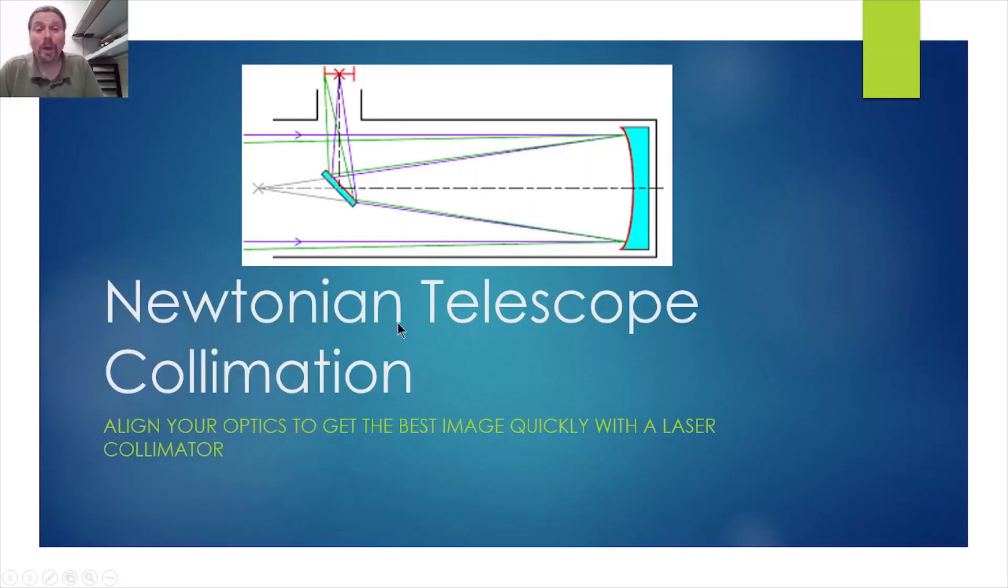So very quickly, we want to align the optics in our Newtonian telescope. If you look at this diagram here, you can see the light path. The primary mirror collects all the light, reflects it to the secondary mirror on a 45 degree angle, and then it reaches your eye or your camera.